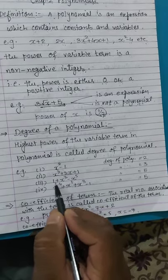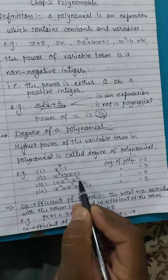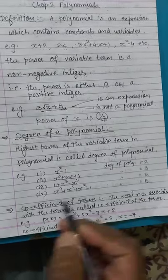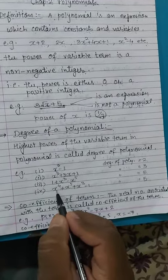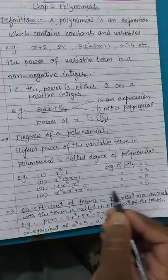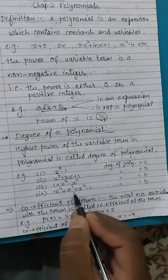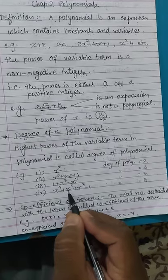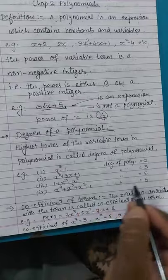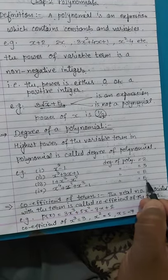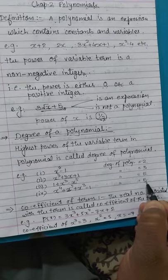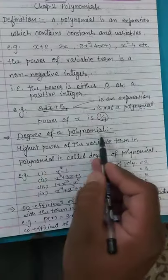So the degree of that polynomial is 5. Fourth example: x to the 4 plus x to the 5 — the highest power of x is 5, so the degree of the polynomial is 5. I hope you understand the concept of degree of a polynomial.